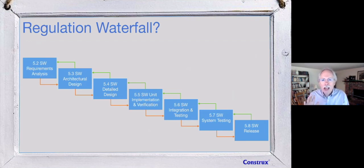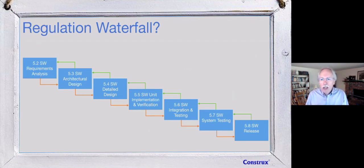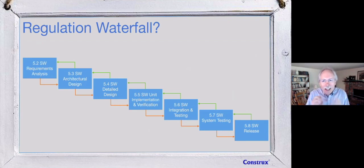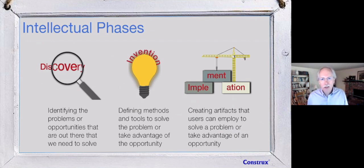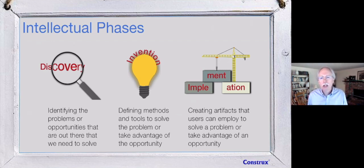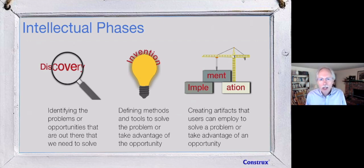Here's our first place where we may need to make a gestalt shift — look at the same reality and see it differently. Section 5.2 is talking about requirements, figuring out the problems. Section 5.5 is doing work. Section 5.6 is about testing. Section 5.8 is about release. We can shift to seeing these not as sequenced activities but as intellectual phases — what has to go on in our heads to actually do this work. I think you can group this into three main areas: discovery, invention, and implementation.